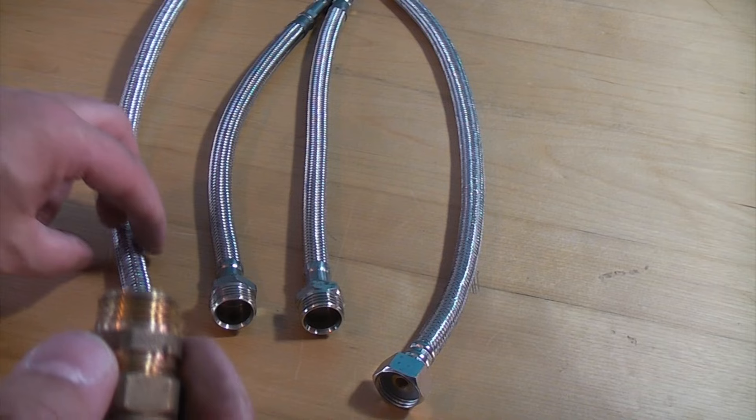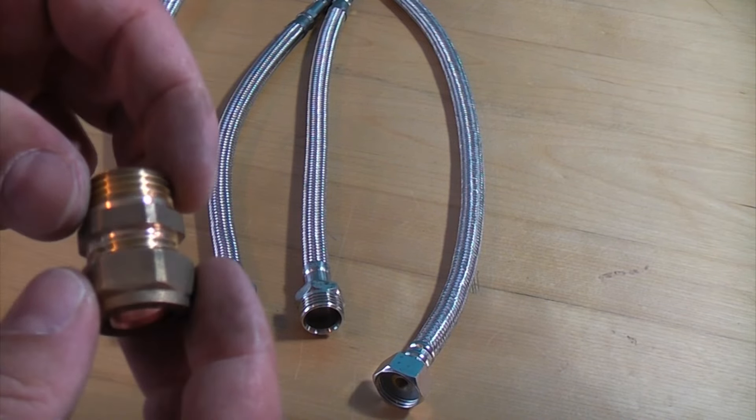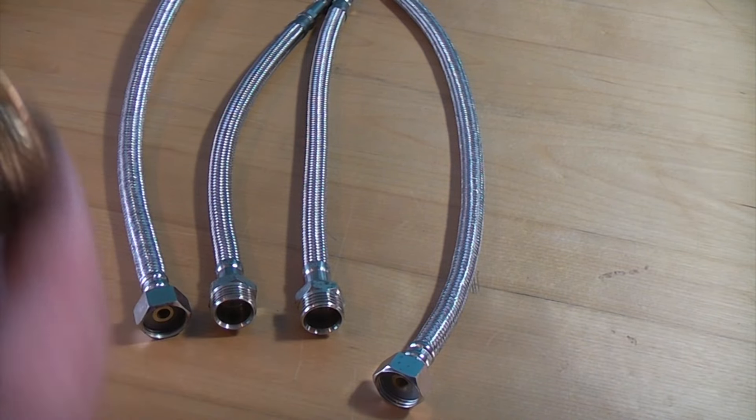Obviously if you've got no isolation valve on your pipe, then instead of using a compression coupling like this, you need to use an isolating valve and then you can actually isolate the water.